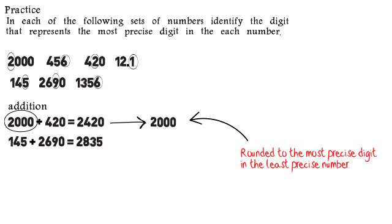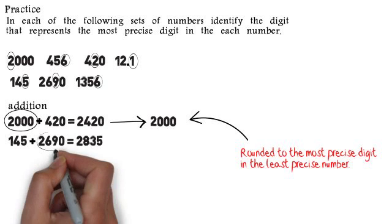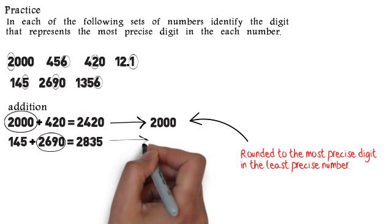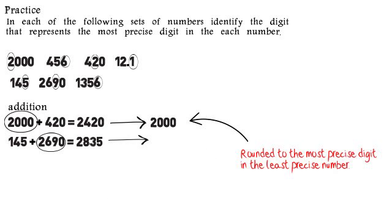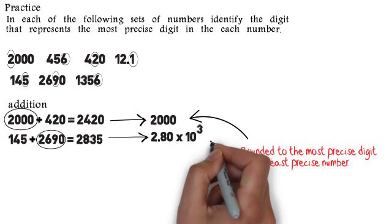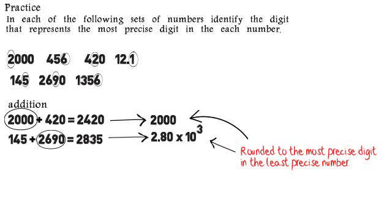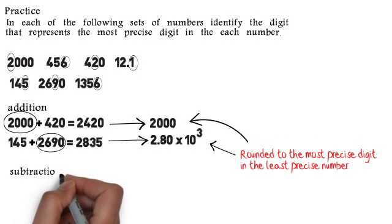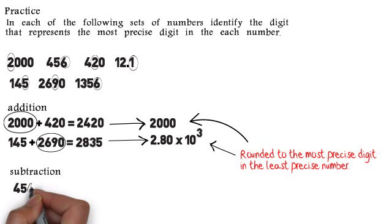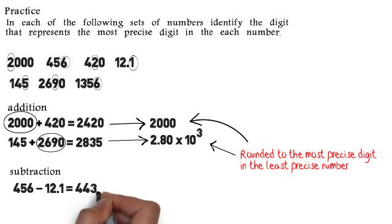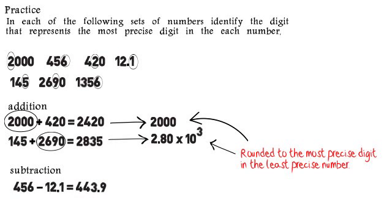For 145 plus 2690, we get 2835. When we round to the most precise spot in the least precise number, we get 2800, which can be expressed as 2.80 times 10 to the third to keep the correct number of significant figures.